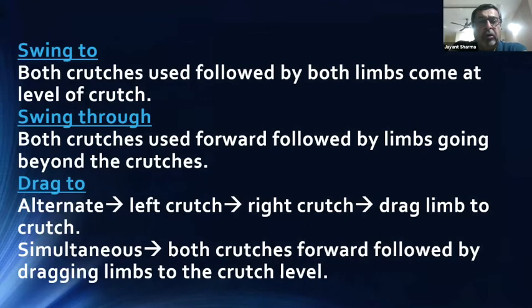In swing-to gait, both crutches are used followed by both limbs coming up to the level of the crutches. In swing-through, the limbs go beyond the crutches. In drag-to gait, alternate left crutch, right crutch, then drag the limbs. Simultaneously both crutches go forward followed by dragging the limb to the crutch level.